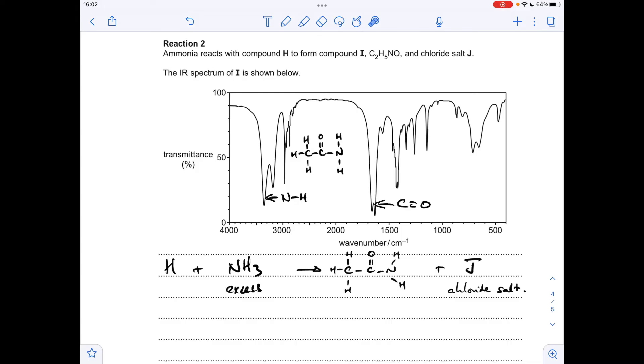To get the structure for H, we need our knowledge of organic reactions. We've produced an amide and we know chlorine is involved. The obvious choice is an acyl chloride, also known as acid chloride, which ties in with the chloride salt. So H is ethanoyl chloride. For the chloride salt, a salt is formed when the H plus ion of an acid is replaced by a metal ion or an ammonium ion. With excess ammonia, J is very likely ammonium chloride.